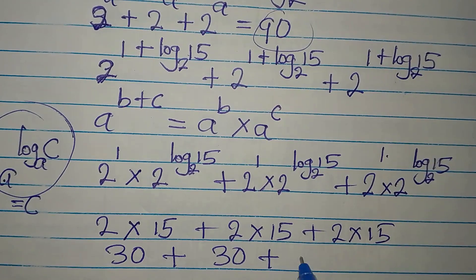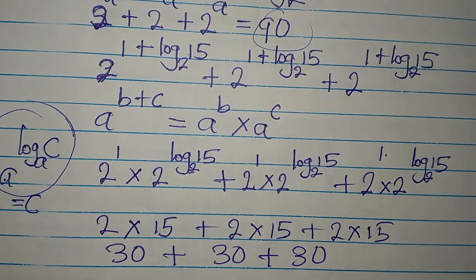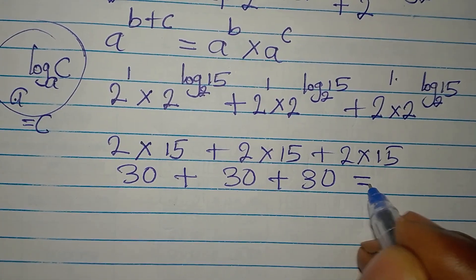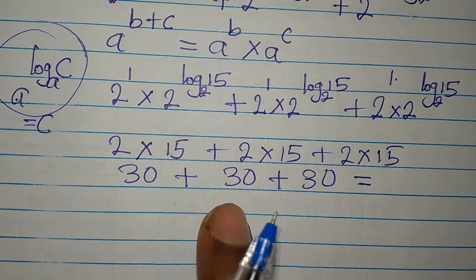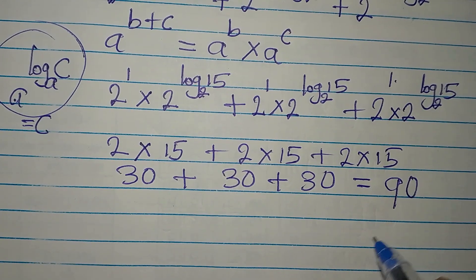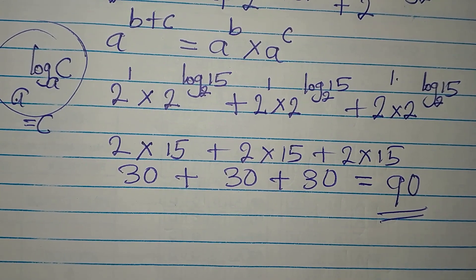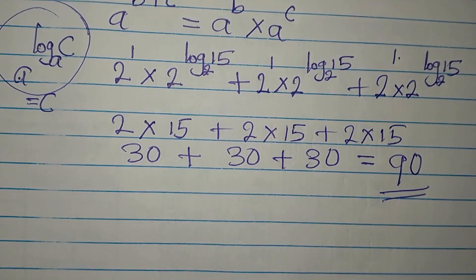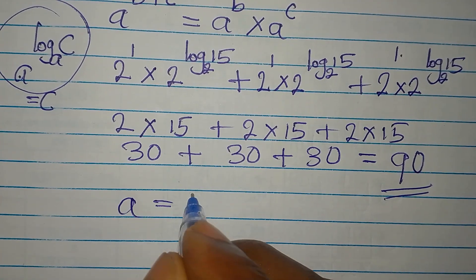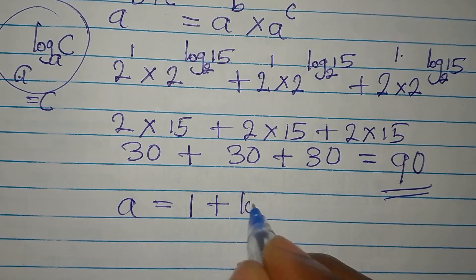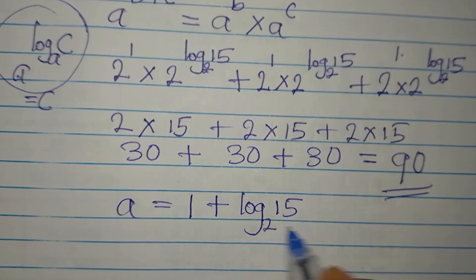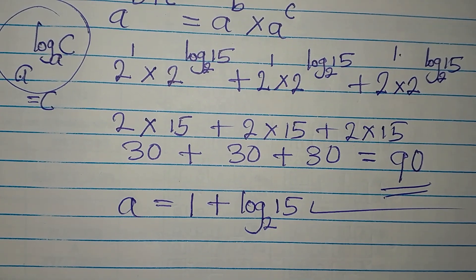2 times 15 is 30, so we have 30 plus 30 plus 30, which gives us 90. This confirms that a equals 1 plus log₂(15) satisfies the equation.